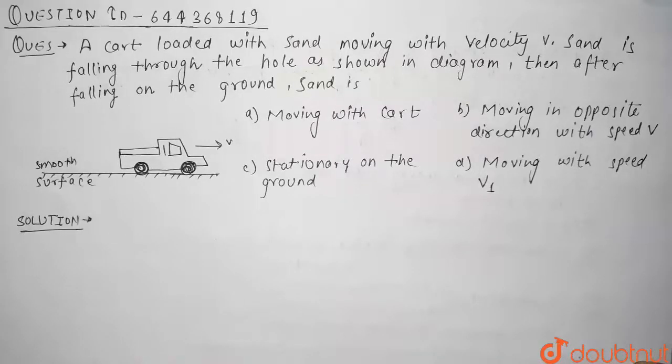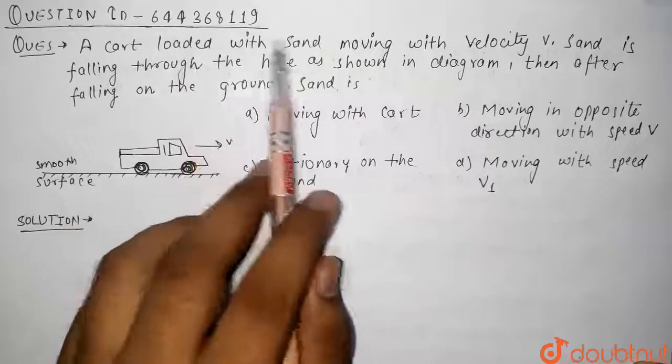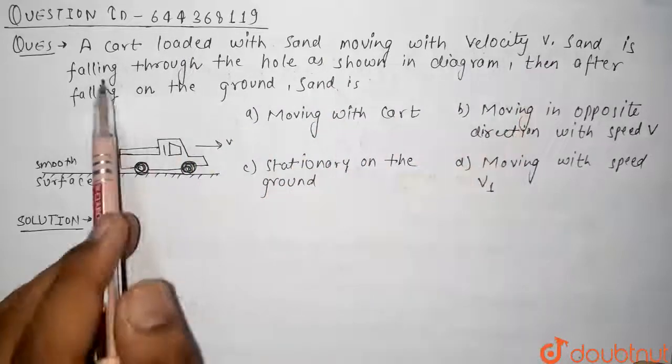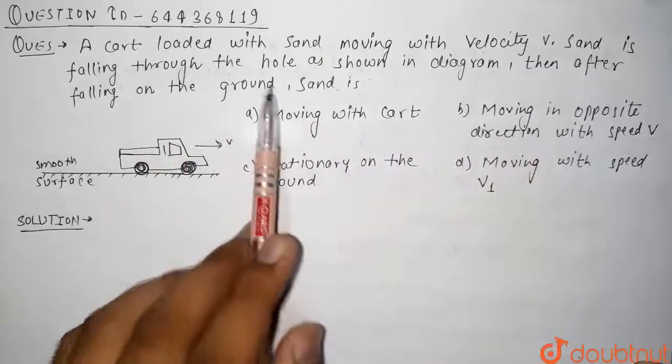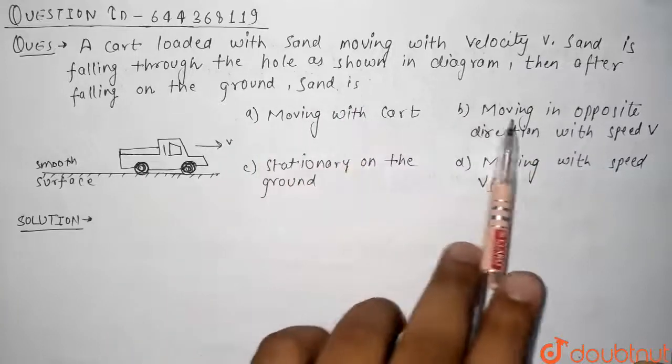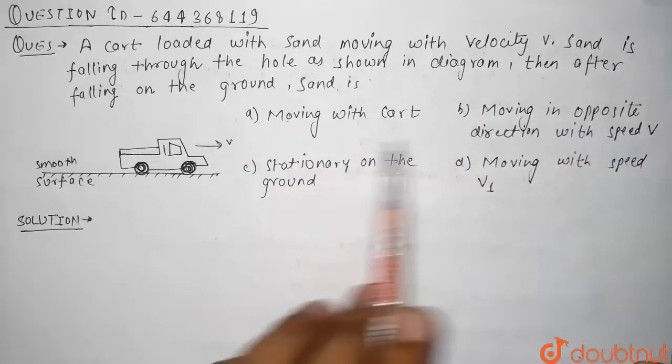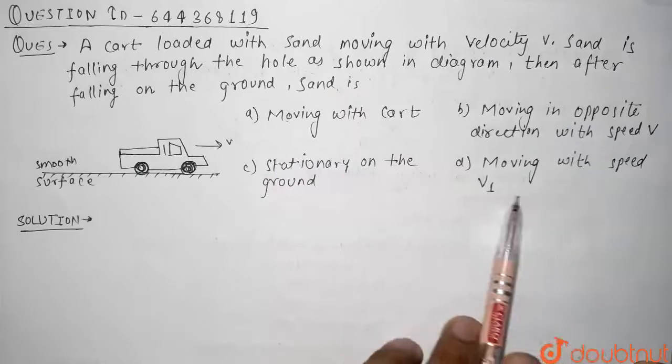Hello guys, so our today's question is: a cart loaded with sand moving with velocity v, sand is falling through the hole as shown in figure. Then after falling on the ground, sand is moving with cart, moving in opposite direction with speed v, stationary on the ground, moving with speed v1.